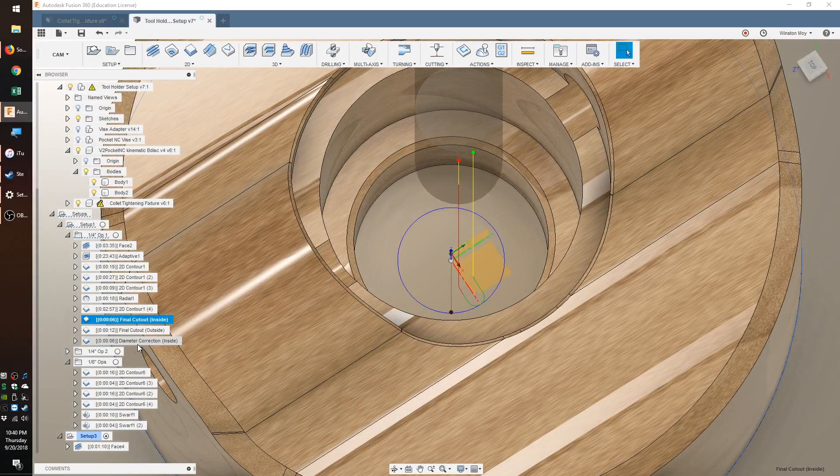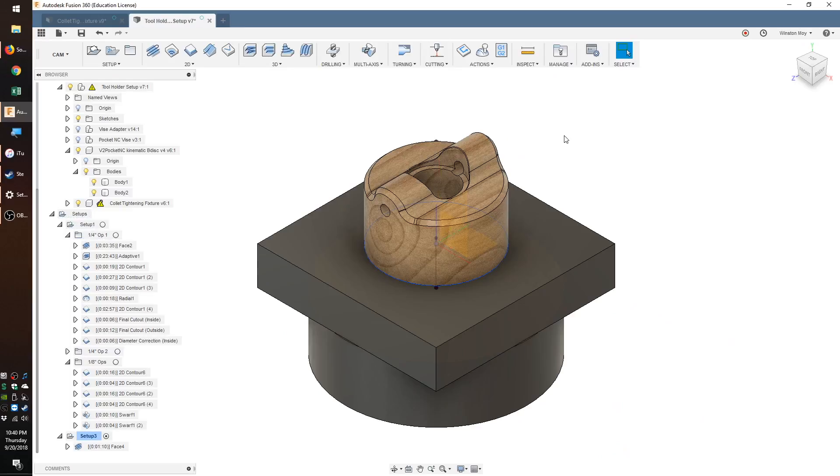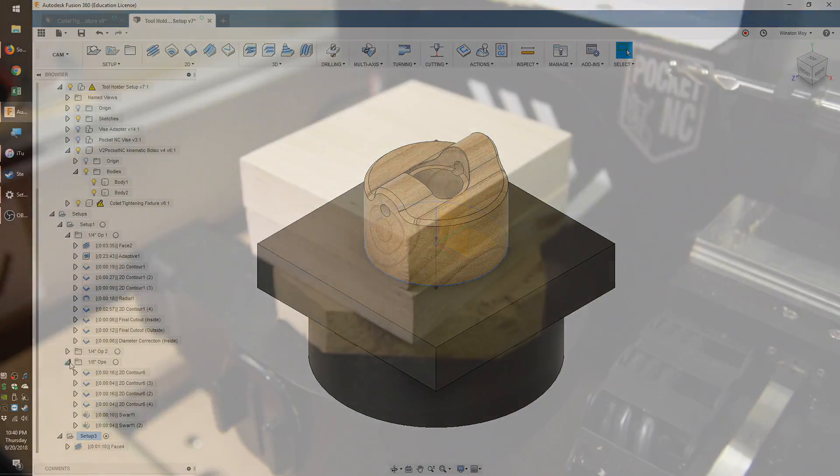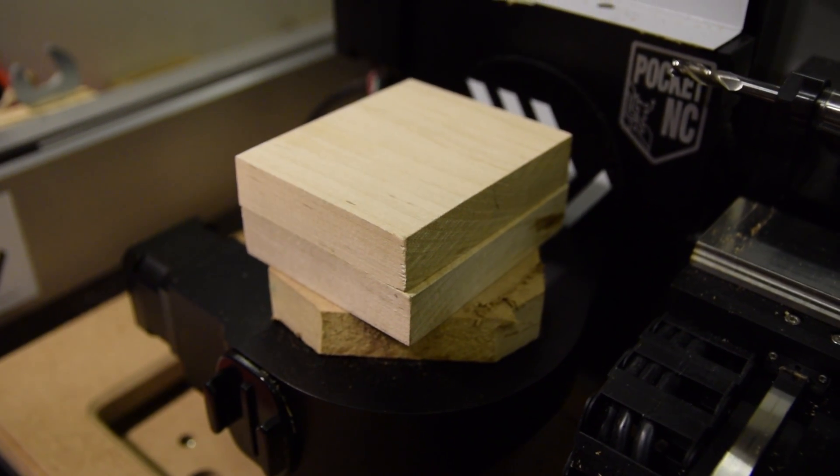I made multiple versions of some of the contour tool paths so that I could creep up on critical dimensions like the diameters of the steel pins and tool holder profile. My maple stock was two pieces that had been glued together with some sanding done to ensure a flat face at the bottom.